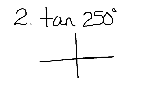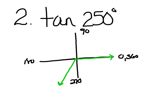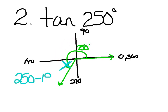Next: tangent of 250 degrees. Sketch with 0, 90, 180, 270, back to 360. 250 falls between 180 and 270, so draw initial side and terminal side, label theta equals 250. Now find the reference angle — how far are you from the x-axis? Going from the terminal side to the x-axis: you know the whole angle is 250 and this line is 180, so take 250 minus 180 and you get a reference angle of 70 degrees.